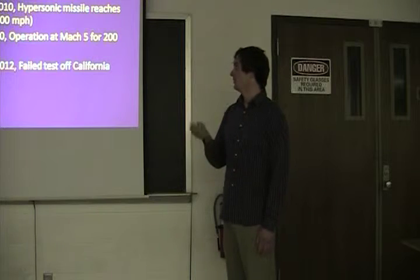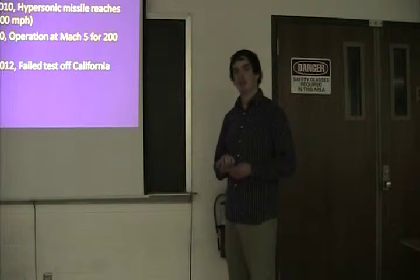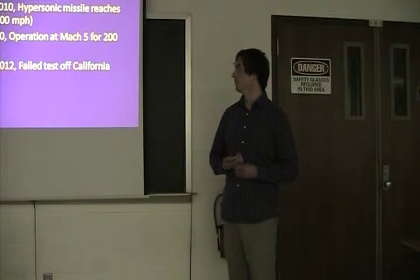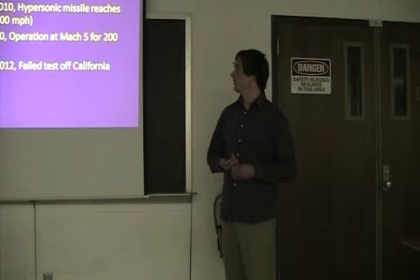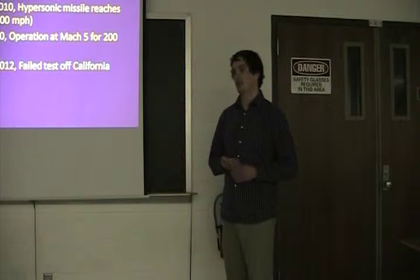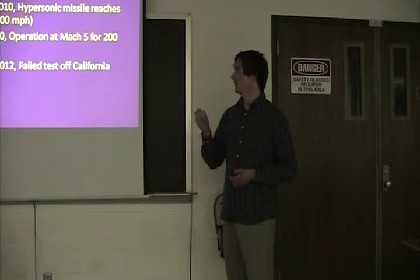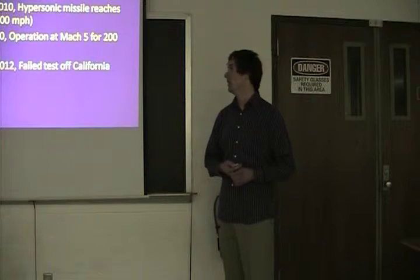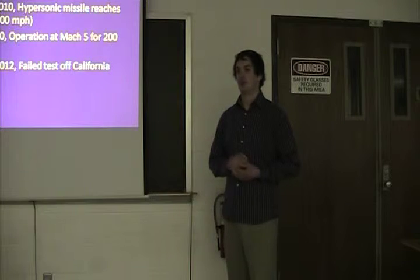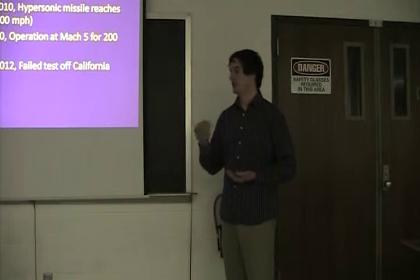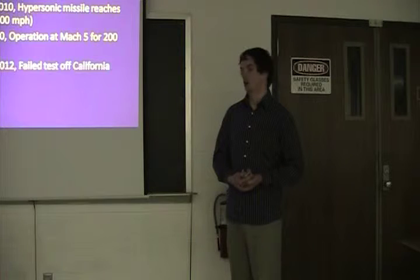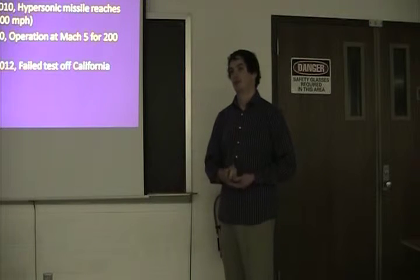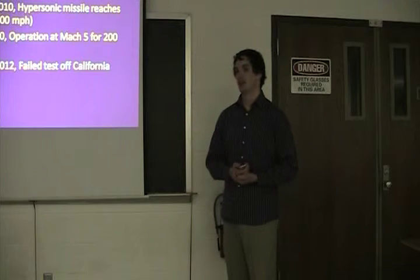Some of the current progress. In 2007, Mach 10 was reached by a test engine. In 2010, hypersonic missiles reached 5,000 km per hour. That was about Mach 7. May 27, 2010, they had a scramjet engine on an X-51 operate at Mach 5 for about 200 seconds, so we increased the range a little. However, on August 15, 2012, there was a failed test, but that was mostly attributed to a faulty control pin and not necessarily the engine.